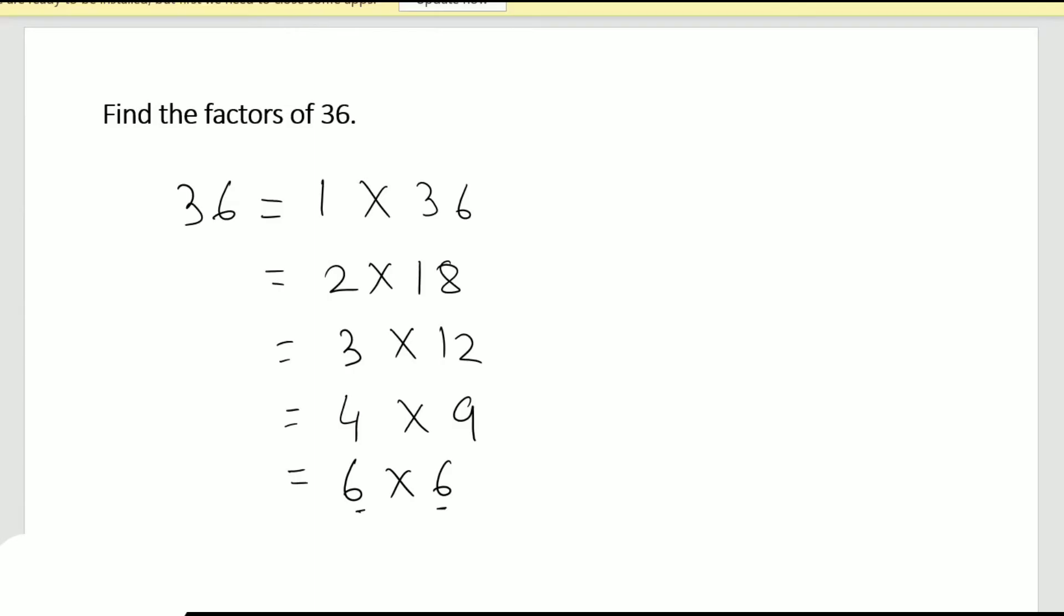And I can see that all these numbers here are the factors of 36. When I list the factors, I can just start from the smallest number. So 1, 2, 3, 4, 6, 9, 12, 18 and 36 are all factors of 36.